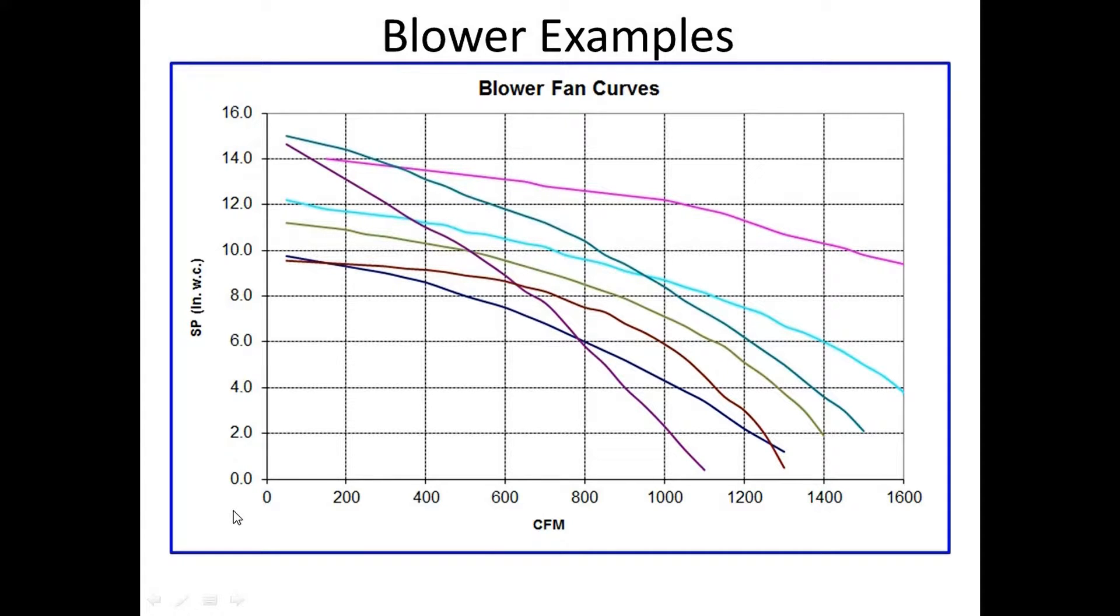One of the things you need to be aware of is that a lot of the units, they'll sell a unit that says, 'Oh, I can do a thousand CFM on this unit and it will do up to say 14 inches of water column static pressure.' What they don't tell you is it won't do those both at the same time. The truth is it curves somewhere in between.